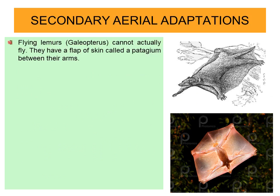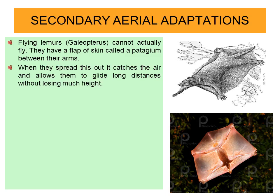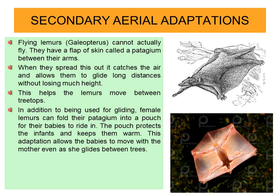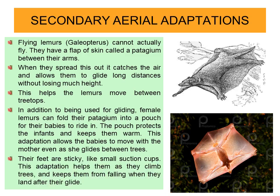The next adaptation is shown by the flying lemur, that is Galeopterus. It cannot actually fly. It has a flap of skin called patagium between the arms — when spread out, it catches the air and allows the lemur to glide long distances without losing much height. This helps the lemur move between treetops. Female lemurs can also hold their patagium into a pouch for their babies to ride in, protecting and keeping them warm. Their feet are sticky like small suction cups, helping them climb trees and preventing falling after landing.